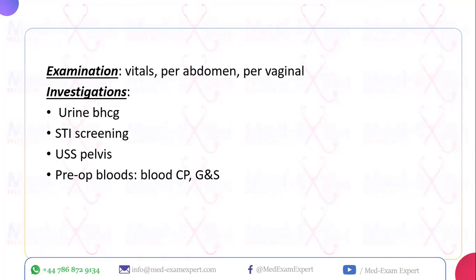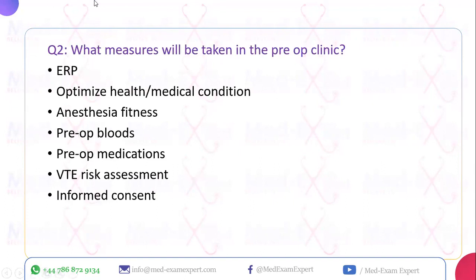For investigations, a urine beta-hCG is mandatory for all patients in the reproductive age group undergoing gynaecological surgery. STI screening is important in all chronic pelvic pain patients according to RCOG guidelines. Pelvic ultrasound should be done before laparoscopy. Pre-operative bloods include FBC and group and save. Note: when the examiner asks for 'further information,' this covers history, examination, and investigations — all three domains must be addressed.